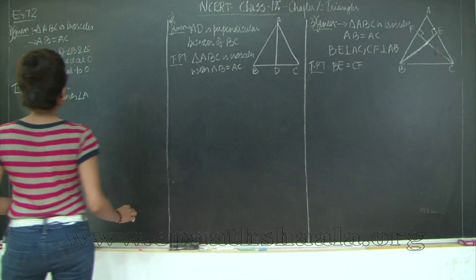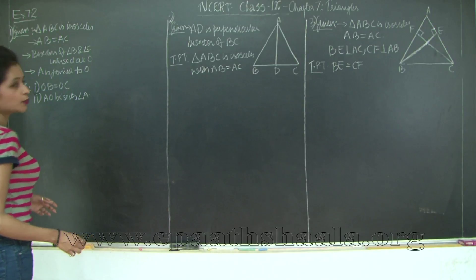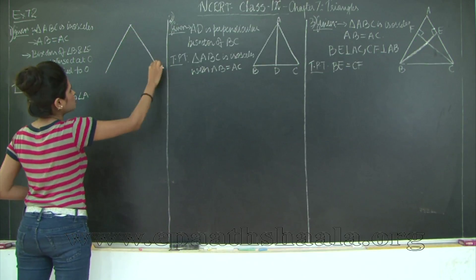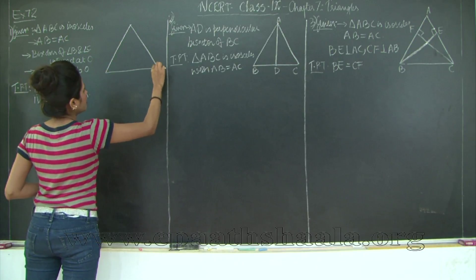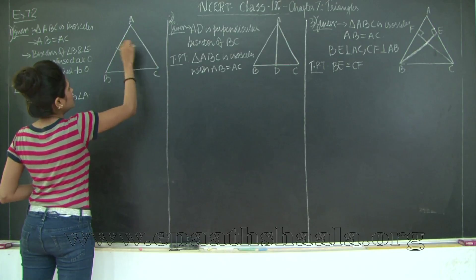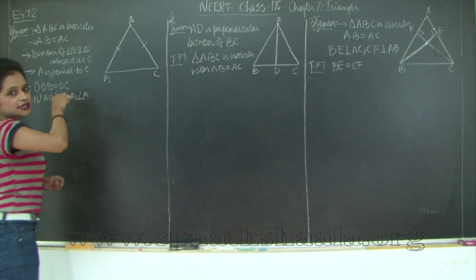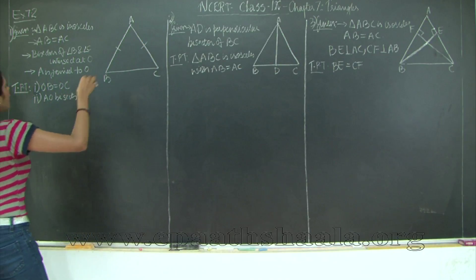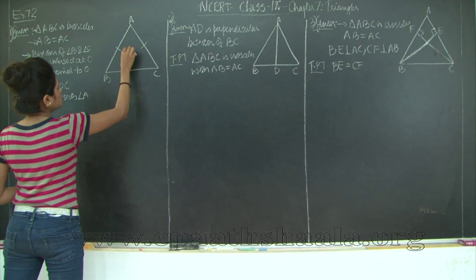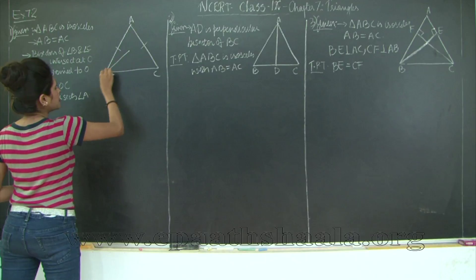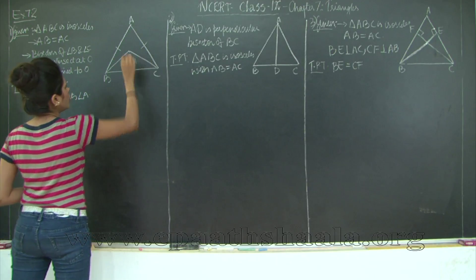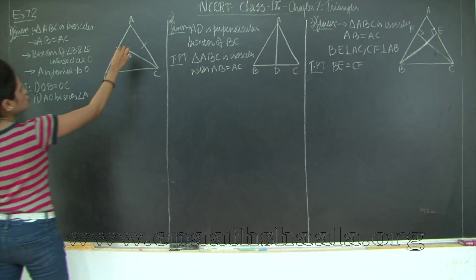ABC is an isosceles triangle with AB equal to AC. I am going to draw my isosceles triangle ABC with AB equal to AC, marked with single dashes. The bisectors of angle B and angle C intersect at O, and A is joined to O.